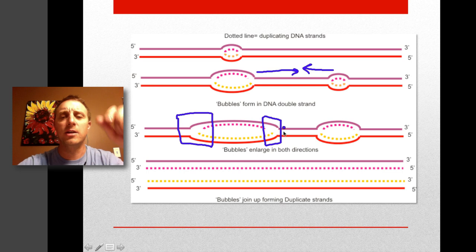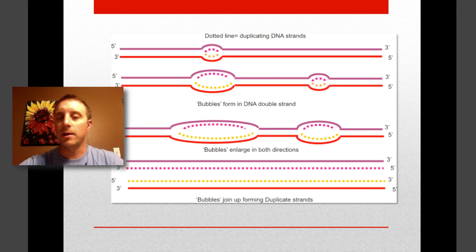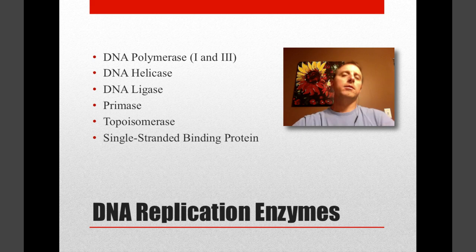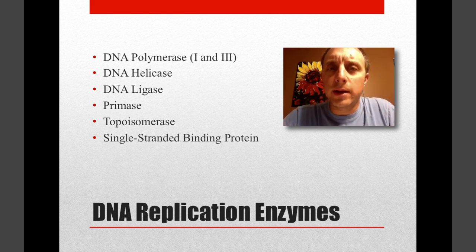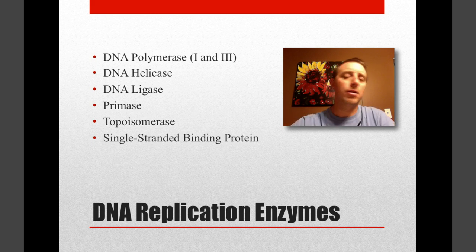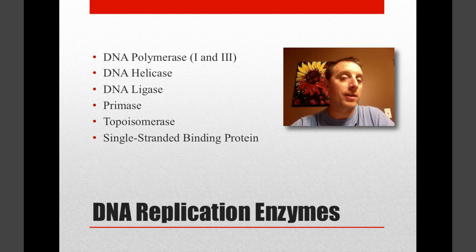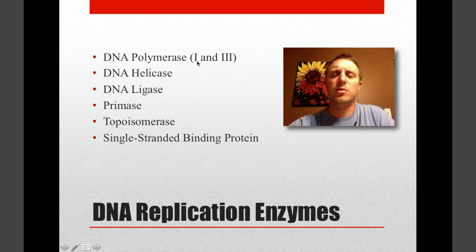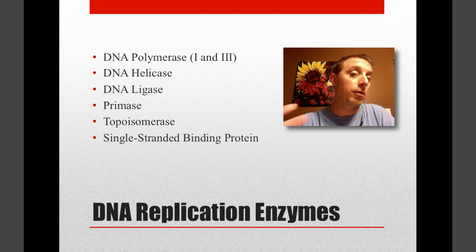This portion right here, where it's all opening up, is what's called the replication fork. That's where really everything is happening in replication, right there at the replication fork. It's important to remember there are two replication forks per replication bubble. Often when we look at what's happening, we focus on one fork, but there's another fork on the opposite side doing the same thing. There's a number of enzymes and proteins involved in DNA replication. This is a list of the ones you should be aware of. You should know all of these, though I wouldn't be too worried about knowing the difference between polymerase 1 and 3.